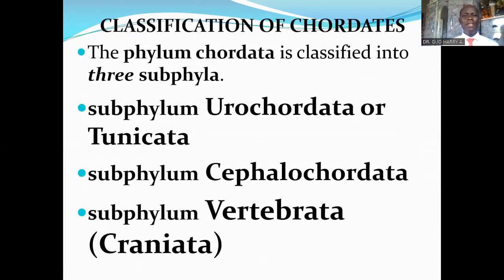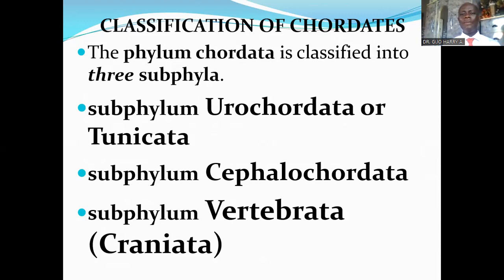Let us now look at the classification of chordates. The Phylum Chordata is classified into three subphyla. The three subphyla are: the subphylum Urochordata or Tunicata; the second is the subphylum Cephalochordata; and the third subphylum is the subphylum Vertebrata or Craniata. Craniata is derived from the fact that they possess a skull that encloses the brain, and Vertebrata means they have a vertebral column.